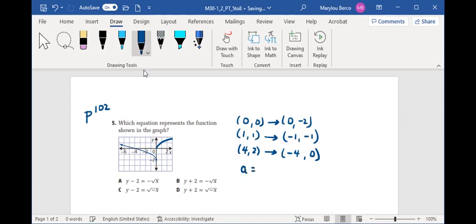a equals 1, b equals negative 1, h equals 0, and k equals negative 2. And the equation transforms to the graph y equals negative root x minus 2, which will give us choice d.